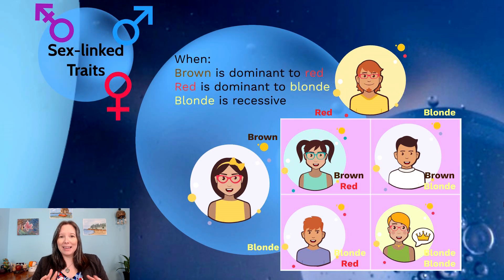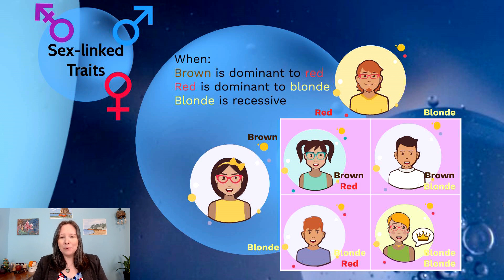We're using a really hypothetical example that is very simplified. In reality, it's a lot more complicated. But for our example, let's say that brown hair is always dominant to red hair, red hair is always dominant to blonde hair, and these are coded through just one allele in our DNA. One parent has red hair with a genotype of one allele for red and one for blonde. The other parent has brown hair, carrying one allele for brown and one for blonde.